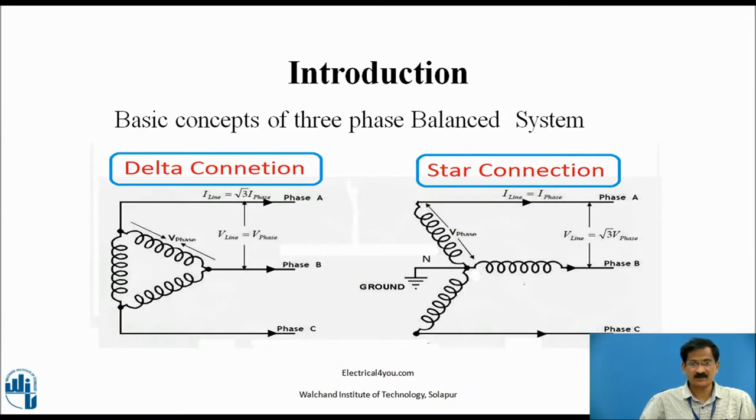Similarly, a load is said to be balanced when these three loads are having same nature, that is R L, R C or R L C, and carry the same phase currents. So in three-phase systems, you will find delta type connections or star type connections.